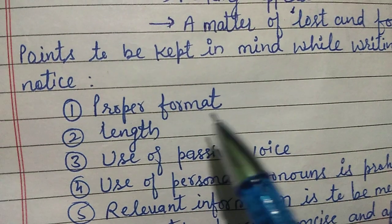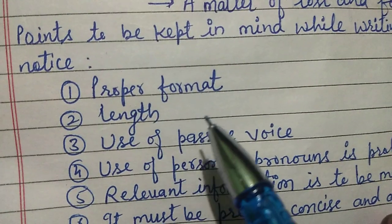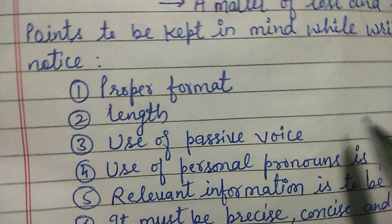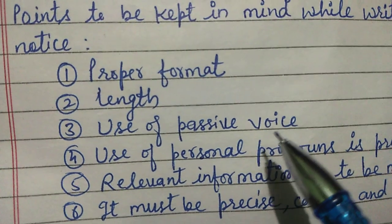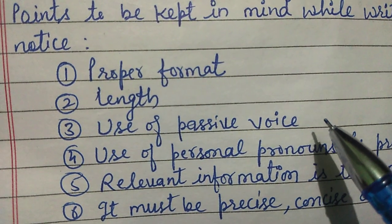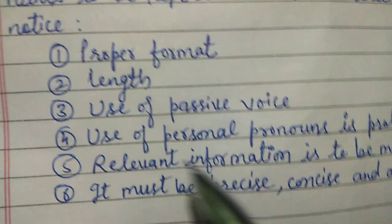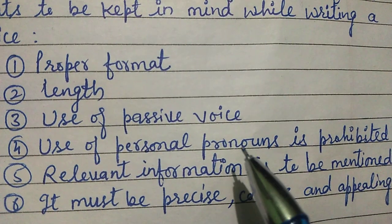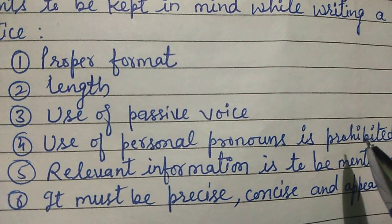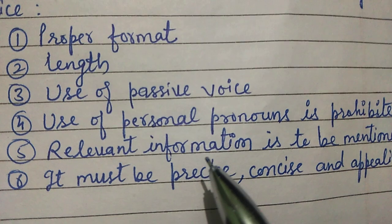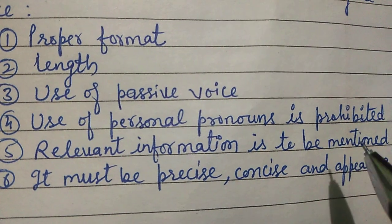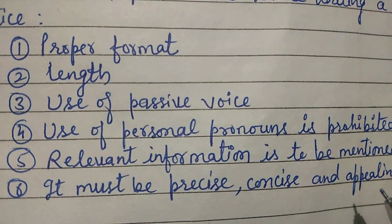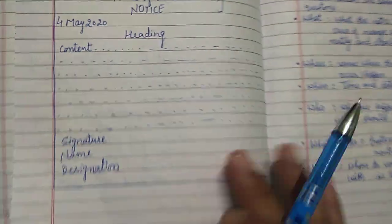Points to be kept in mind while writing a notice: proper format — a notice must be written in a proper format. Length — the notice should not exceed 250 words, as decided by the CBSE board. Use of passive voice is suggested while writing a notice. Use of personal pronouns is prohibited. Only relevant information is to be given, and the notice must be precise, concise, and appealing — short and sweet.